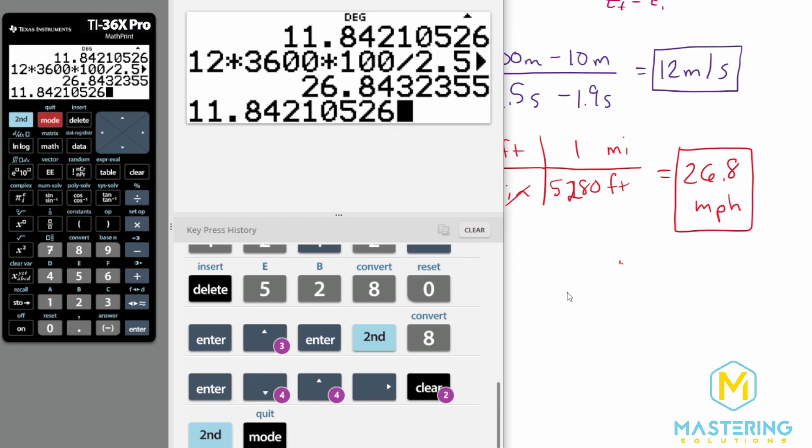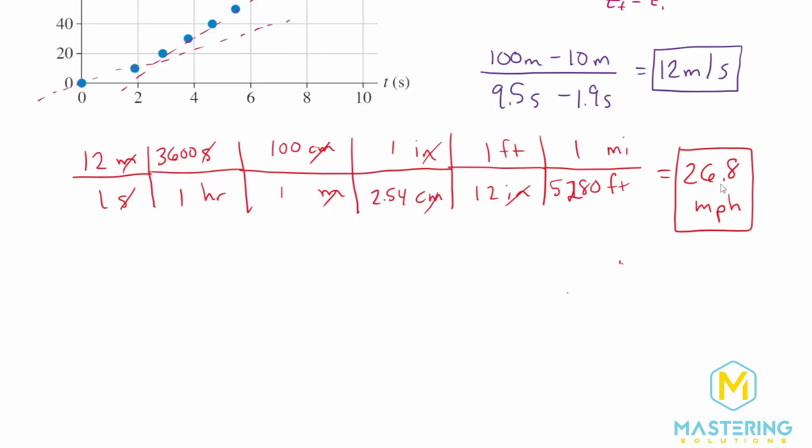So this is the answer. We have 12 meters per second and 26.8 miles per hour for the fastest time of Usain Bolt in his world record run.